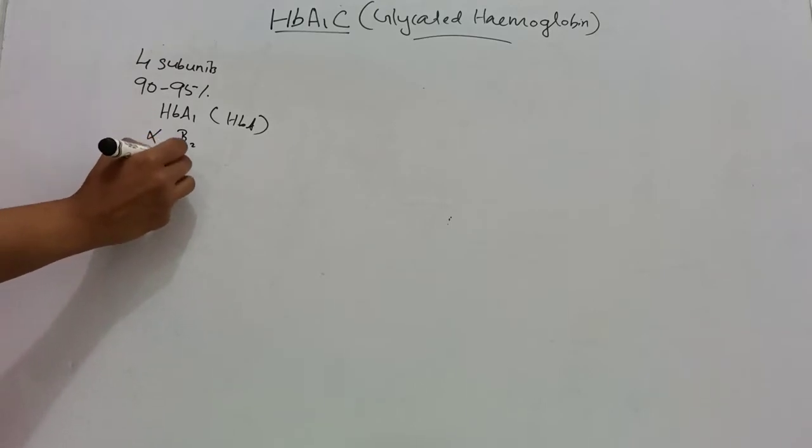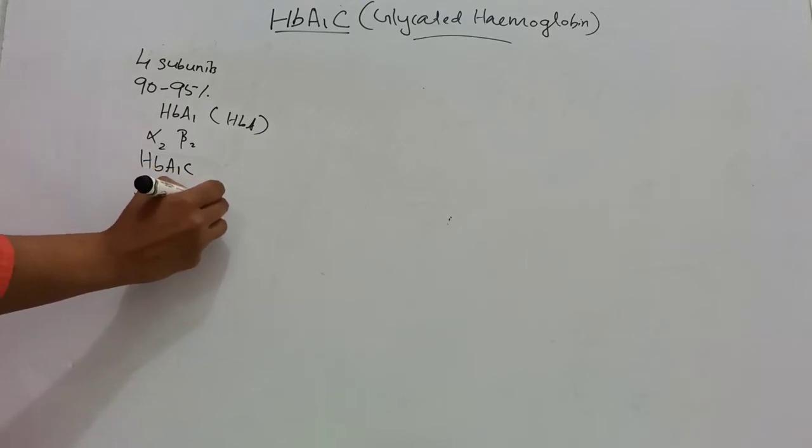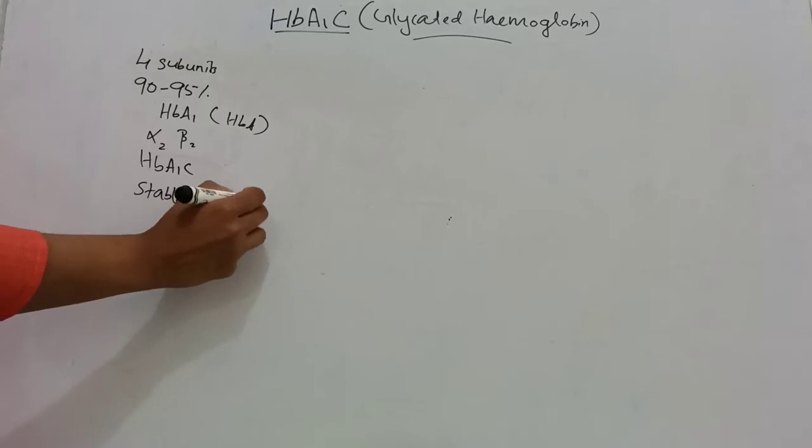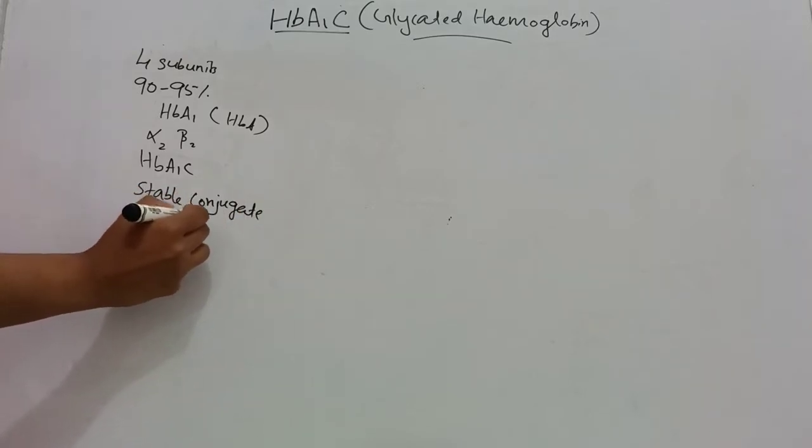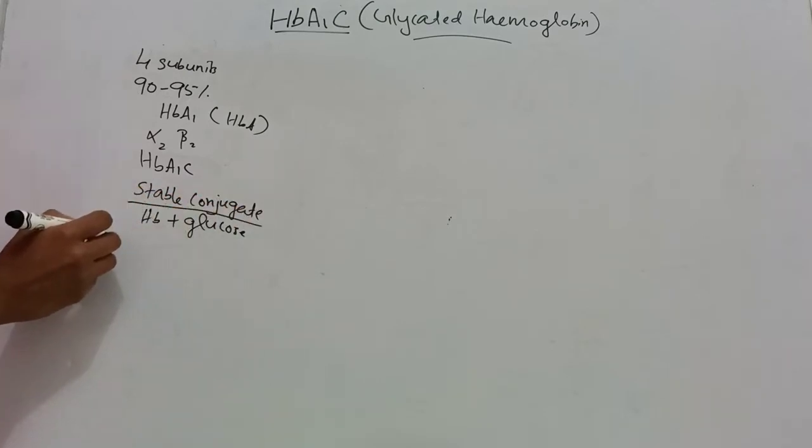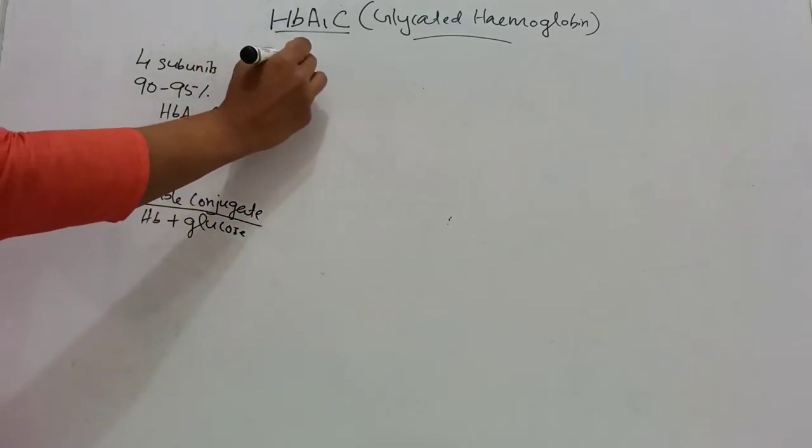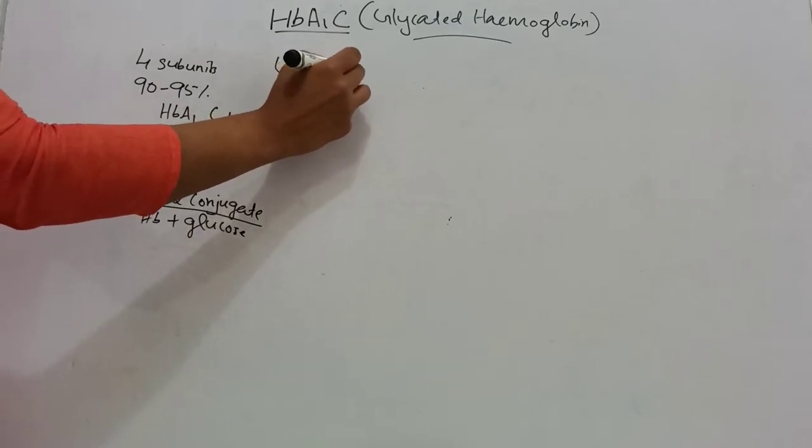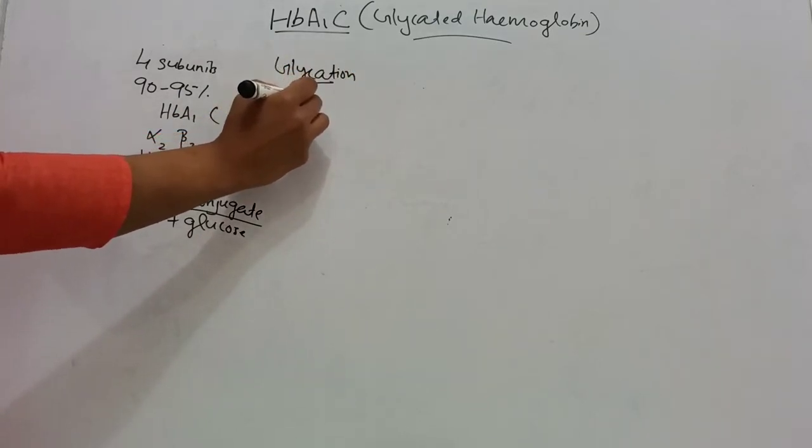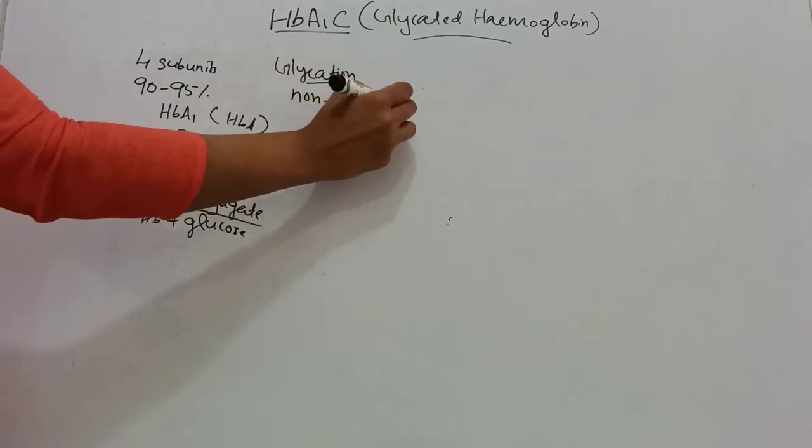HbA1c is the glycated form of hemoglobin. This term glycated hemoglobin describes a chemically stable conjugate of hemoglobin with glucose. And this glycation is non-enzymatic addition of sugar.